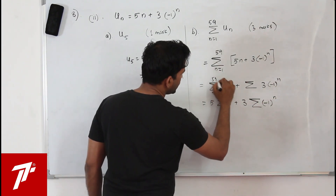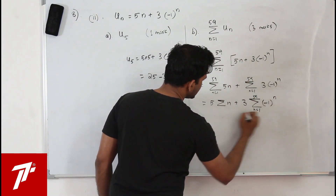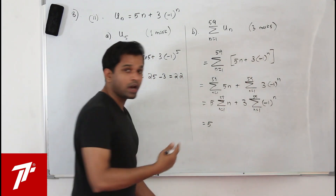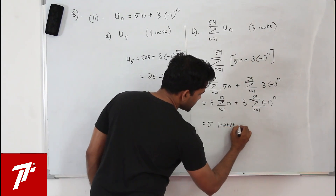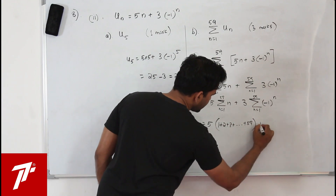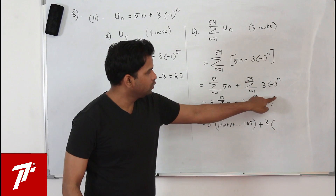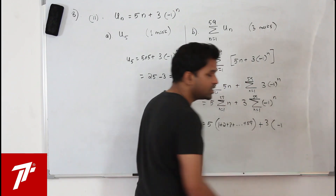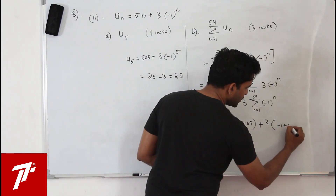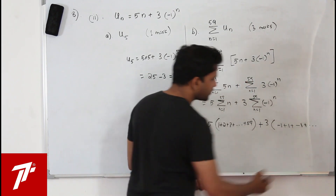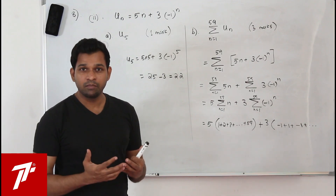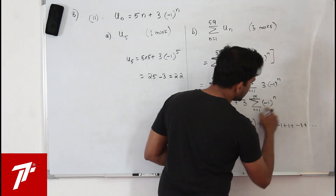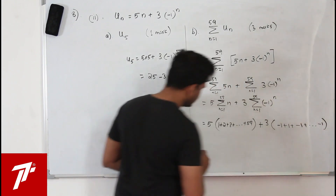Your limit is n equals 1 to 59. Substituting, the first part gives 1 plus 2 plus 3 plus ... plus 59. For the second part, substitute n equals 1, 2, 3, etc.: minus 1 to the power 1 is minus 1, minus 1 to the power 2 is positive 1, minus 1 to the power 3 is minus 1, and so on — odd powers give minus 1, even powers give plus 1. The last term is minus 1 to the power 59, which is minus 1.